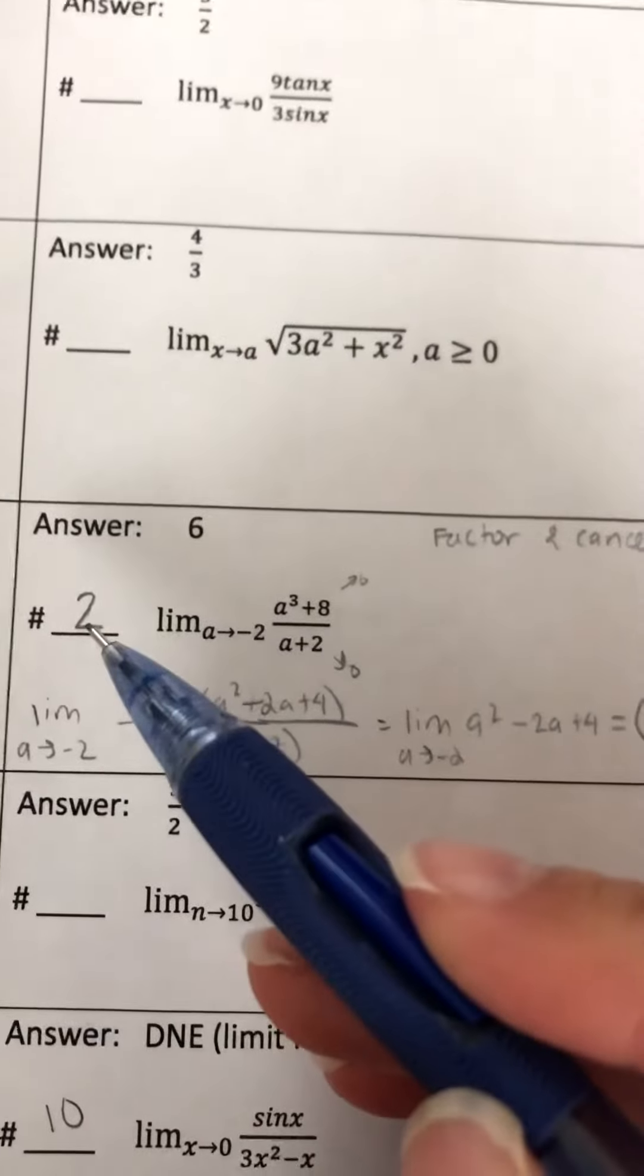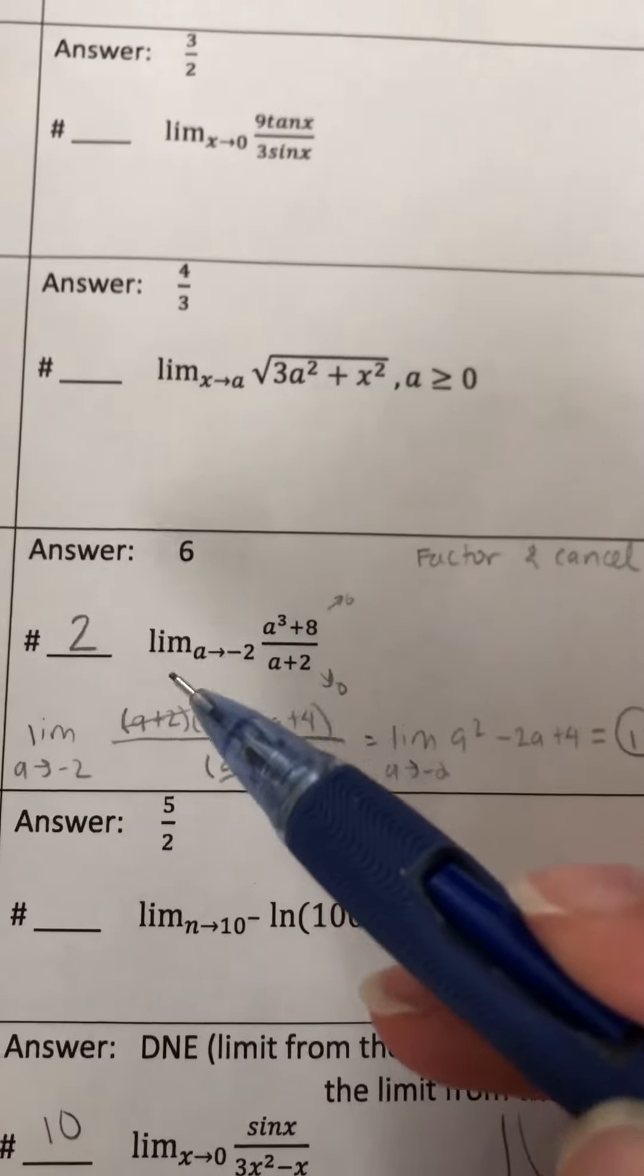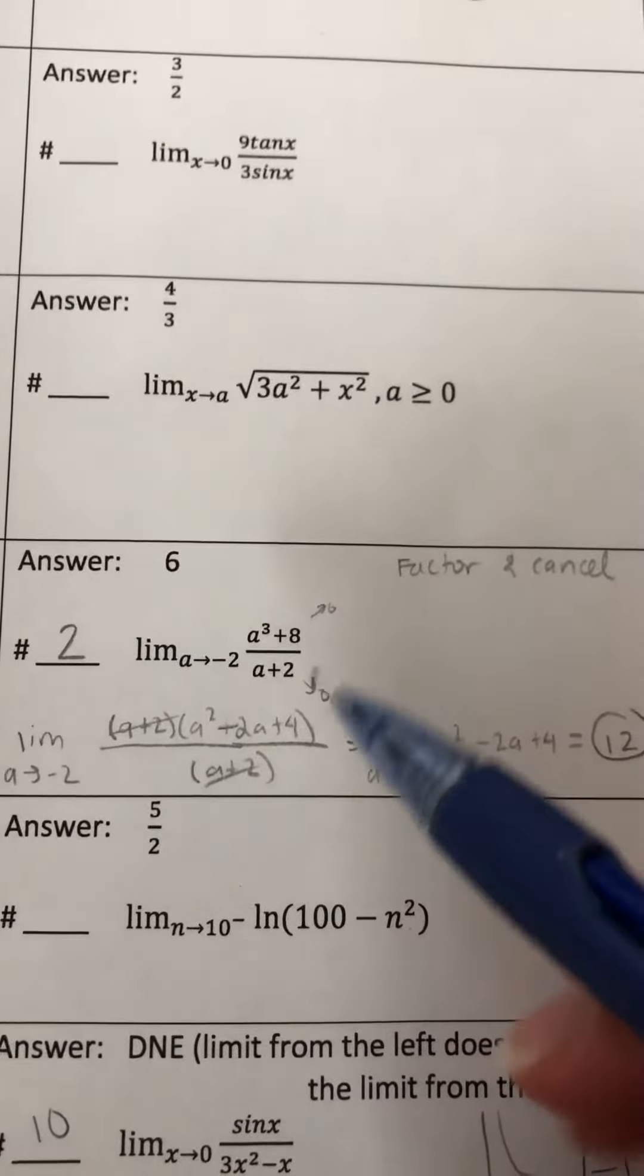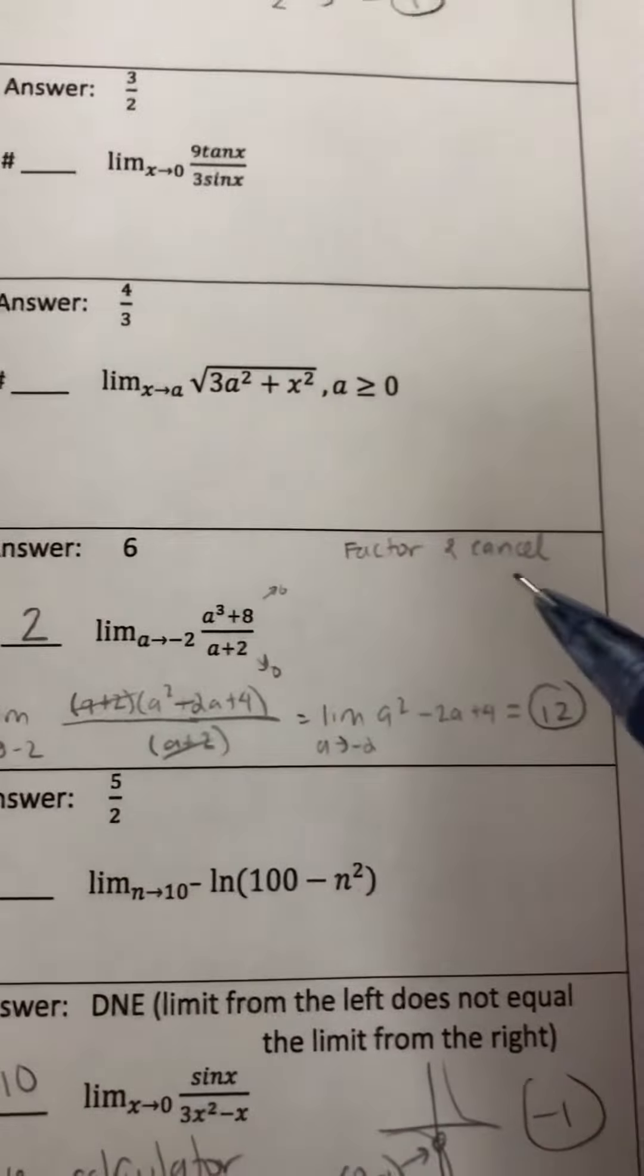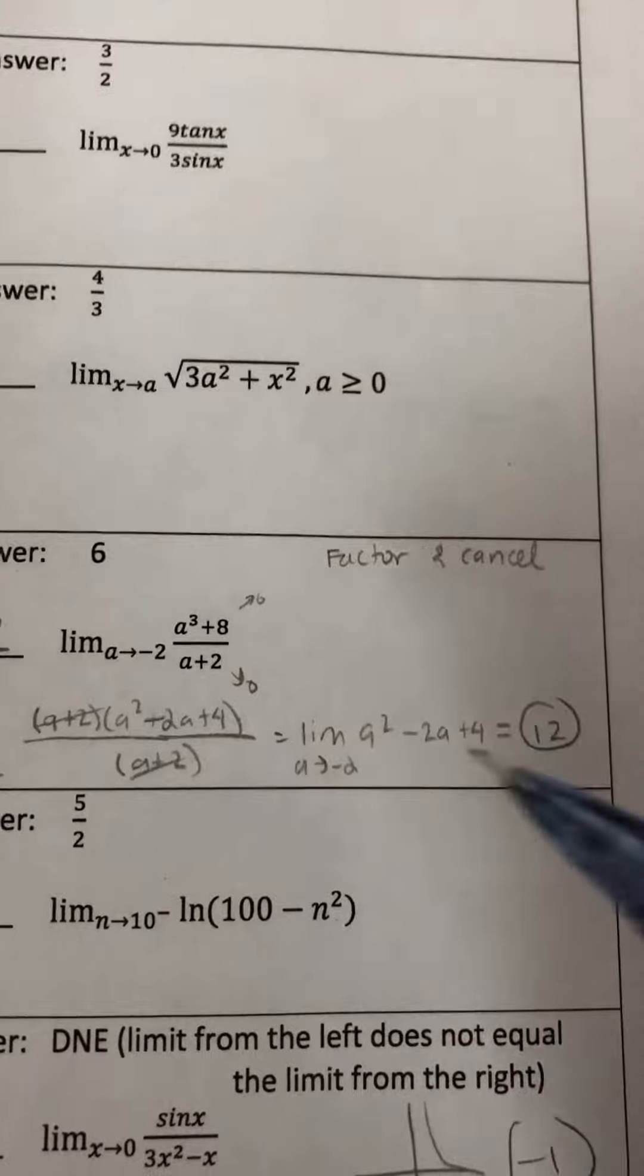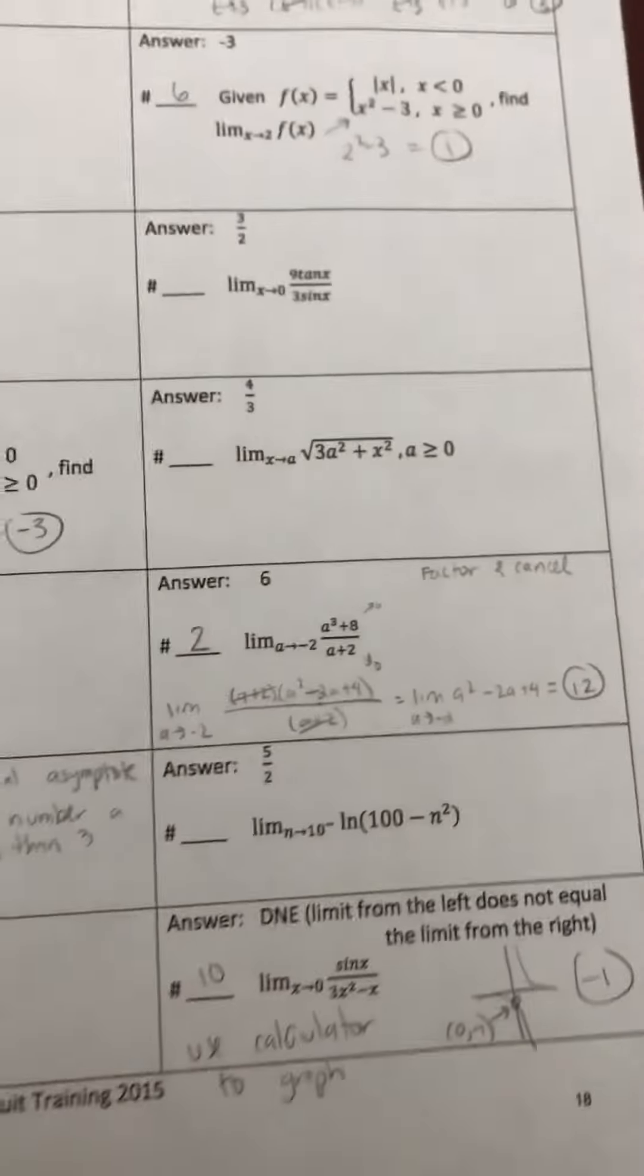So you try to work this problem out now. You're taking the limit as x approaches negative 2. You plug it in and you end up getting 0 over 0, so that means we're gonna have to factor and cancel. You work that whole thing out, then you end up getting 12.